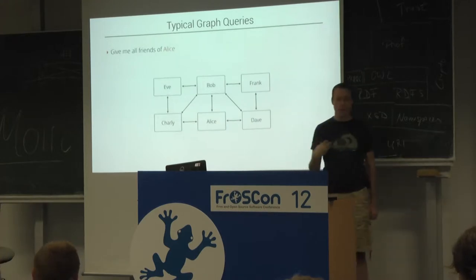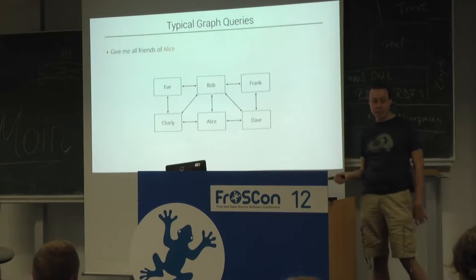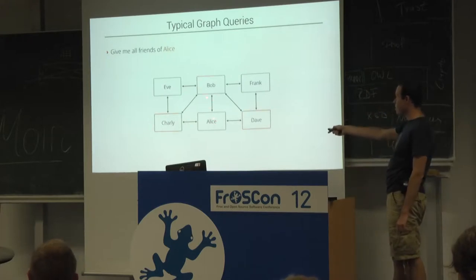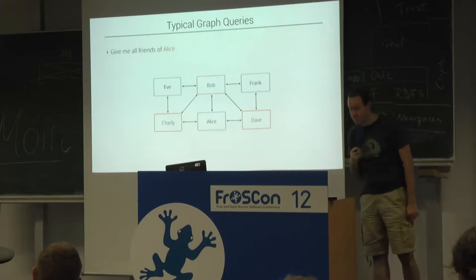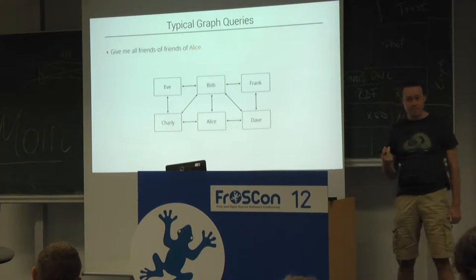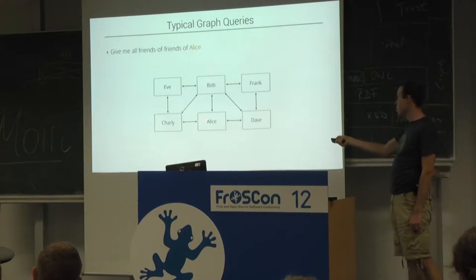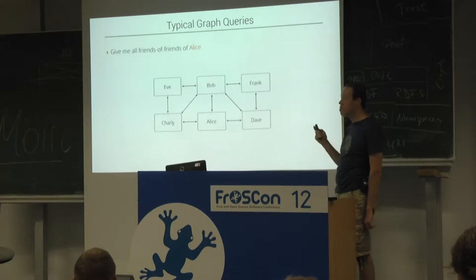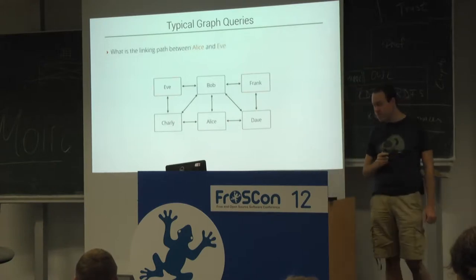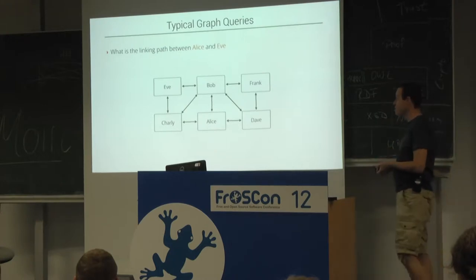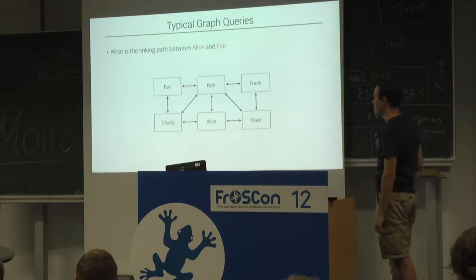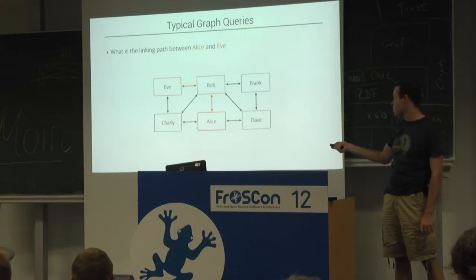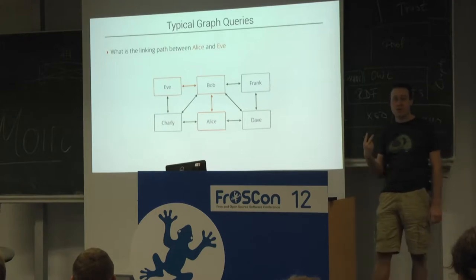What are typical graph queries — queries that graph databases perform very well? For example, give me all the friends of Alice: start at Alice and go one step to find all connected vertices. Give me all friends of friends of Alice: start at Alice and go two steps, but everything reachable within one step should not be part of the result. What is the linking path between Alice and Eve? We pick two random vertices and find the shortest path — also possible would be Alice to Charlie to Eve, both requiring two edges.